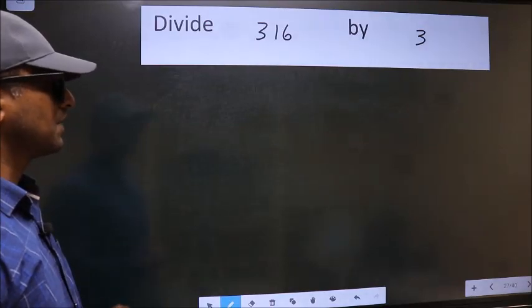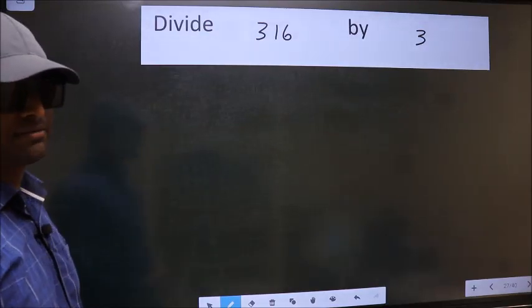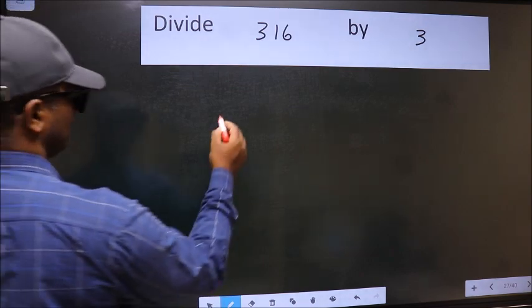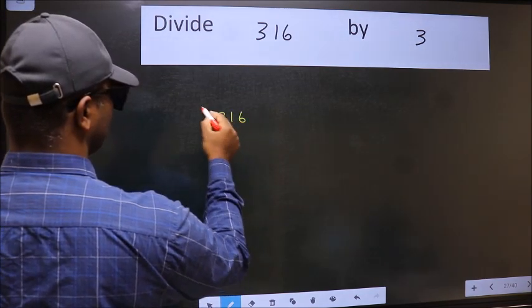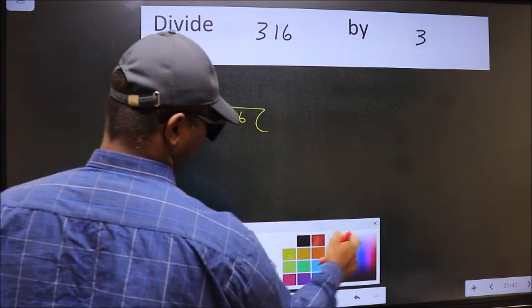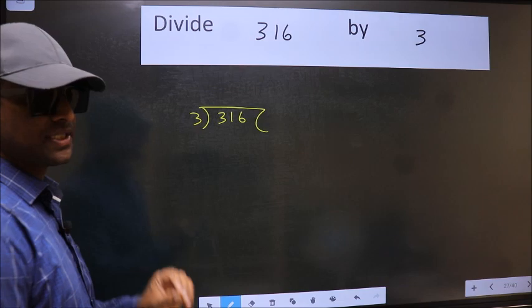Divide 316 by 3. To do this division, we should frame it in this way: 316 here and 3 here. This is your step 1.